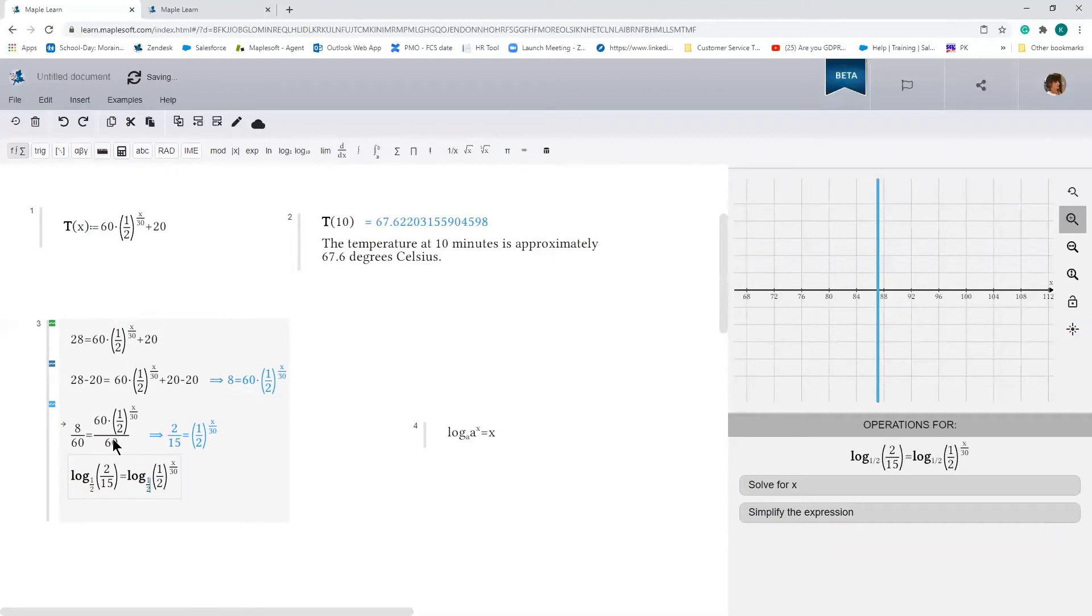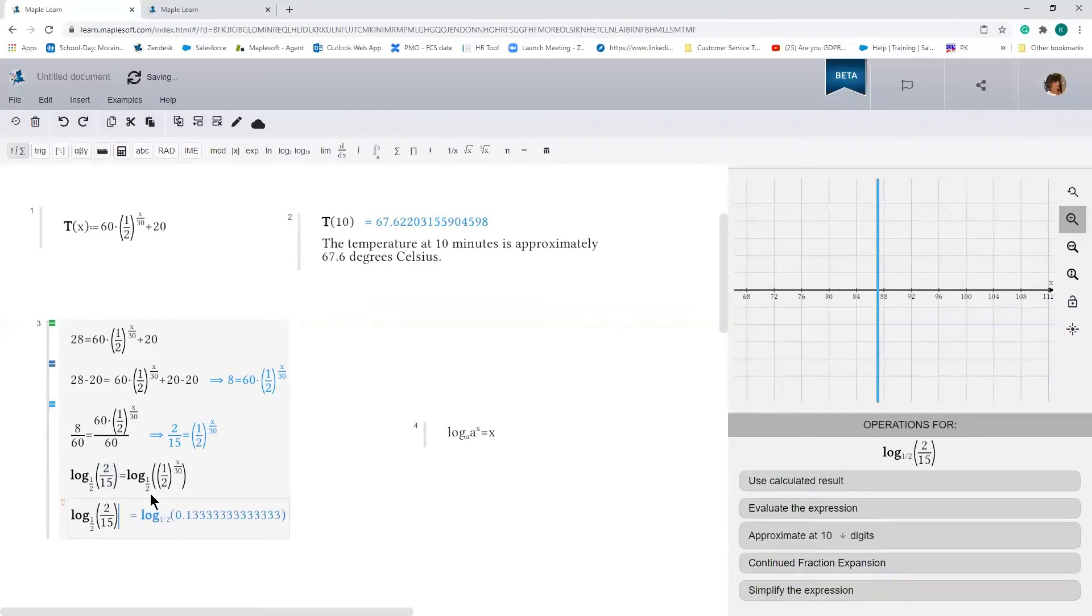And I like to put things in brackets just to make it visually clearer what I'm doing. So we're going to take the log base a of a to the x, and this is going to simplify to x over 30.